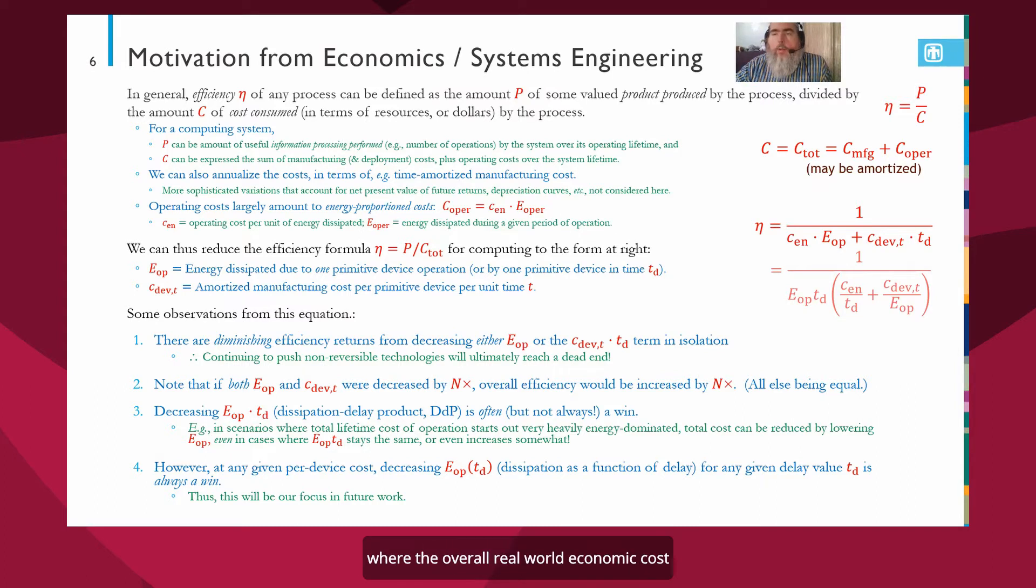They're going to asymptote out to the point where the overall real-world economic cost of computing is no longer improving once we get to the point that this term is insignificant compared to the other term. And we're already starting to see this happen, performance is starting to become more and more heavily dominated by power constraints rather than by cost, and that's why we have so much dark silicon today. So, transistors we can manufacture, but can't engage usefully during operation. Notice, however, if you reduce both of these terms in the denominator by a factor of n, then you increase efficiency by a factor of n. So, that's a desirable thing to reduce energy dissipation commensurately with manufacturing-related costs and hardware efficiency.